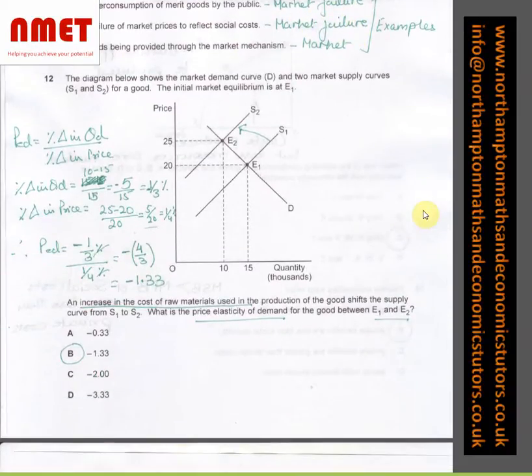In question number 12, the diagram below shows the market demand curve D and two market supply curves S1 and S2 for a good. The initial equilibrium is at E1. We can see the supply has moved inwards and the price has increased from 20 to 25 and the quantity has moved inwards.